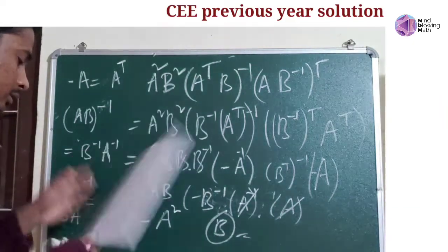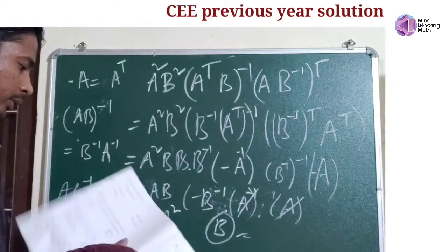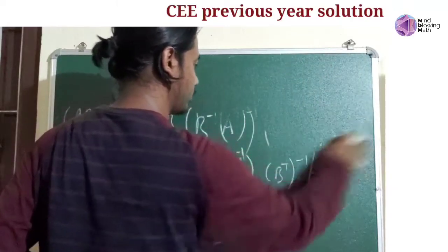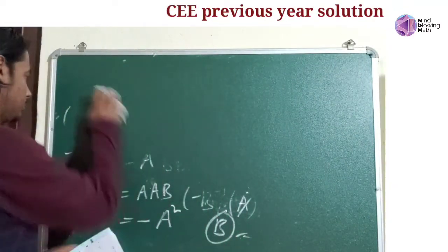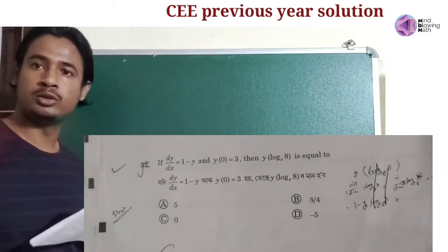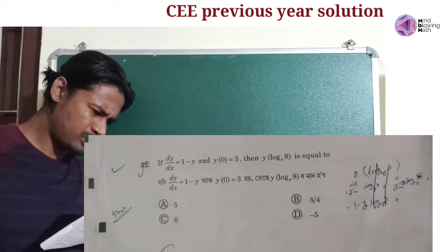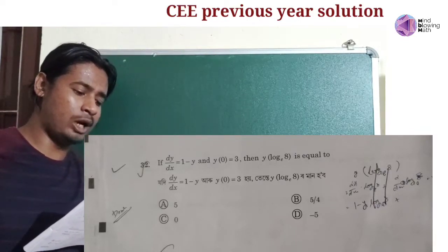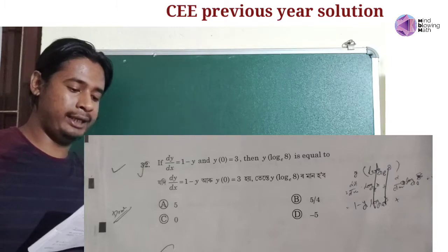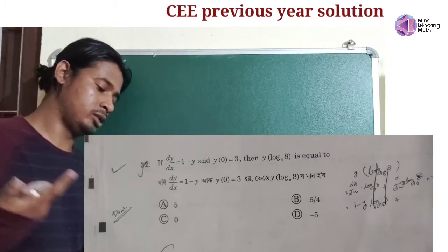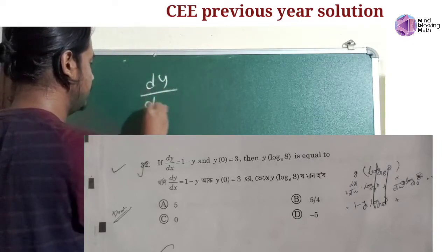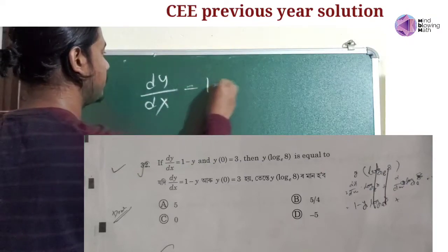So next question for me: problem 32. Basic differential equation. This is one of the most easiest questions and a practical one. Question number 32 to solve: if dy/dx is equal to 1 minus y, and y(0) is equal to 3, then we find y(log e8). First, the differential equation to solve: dy/dx given as 1 minus y.